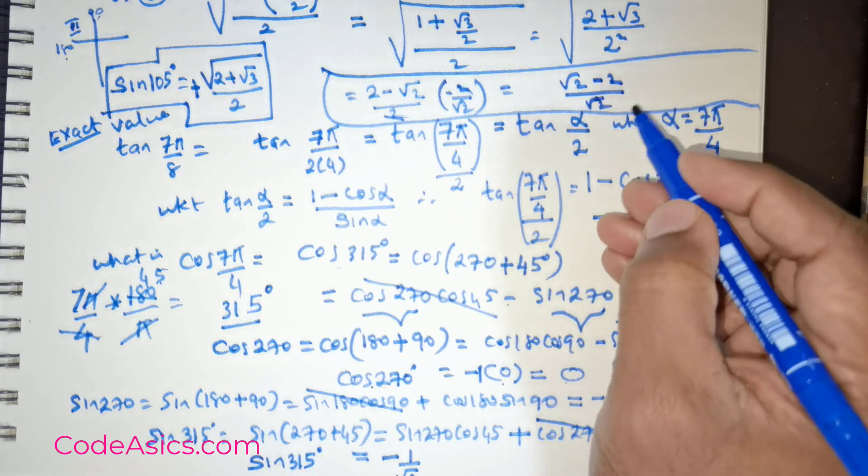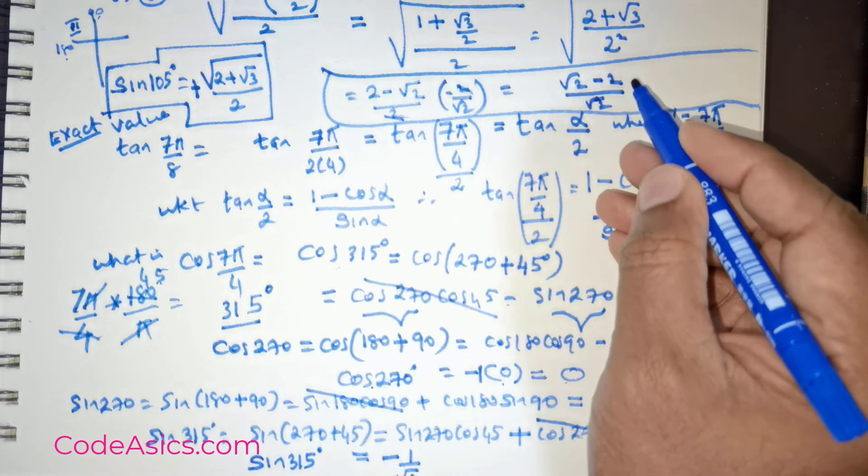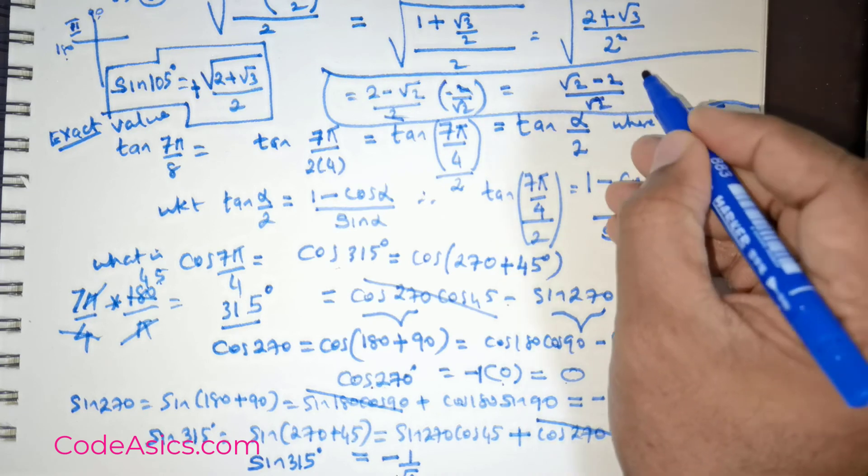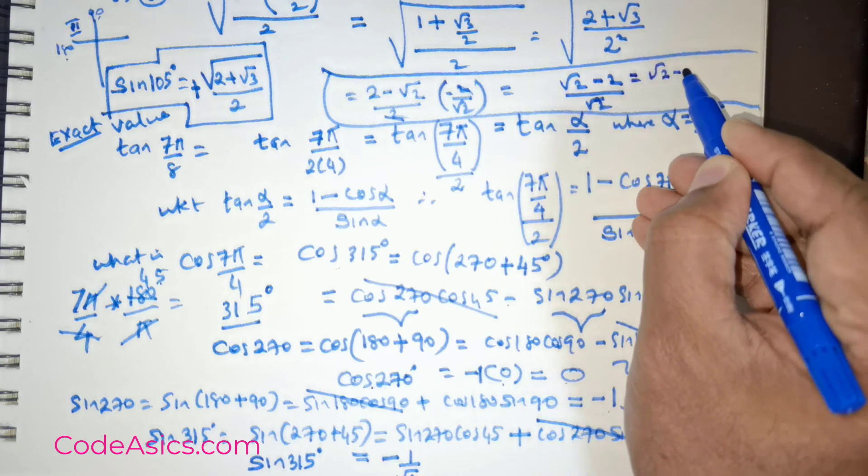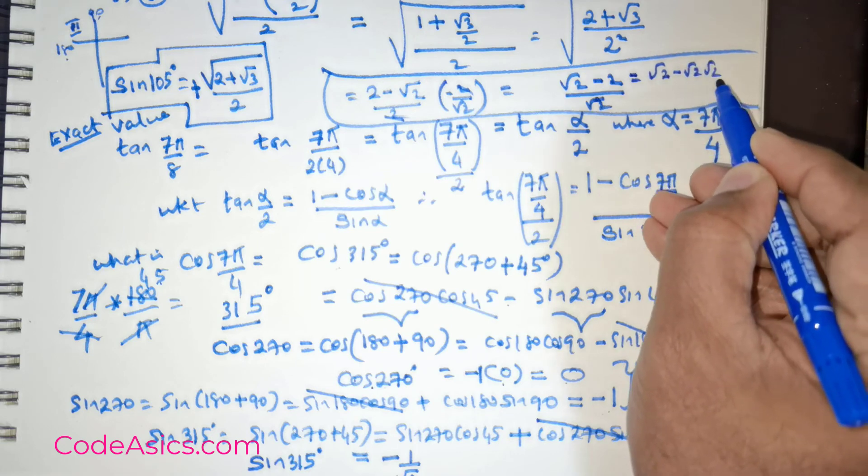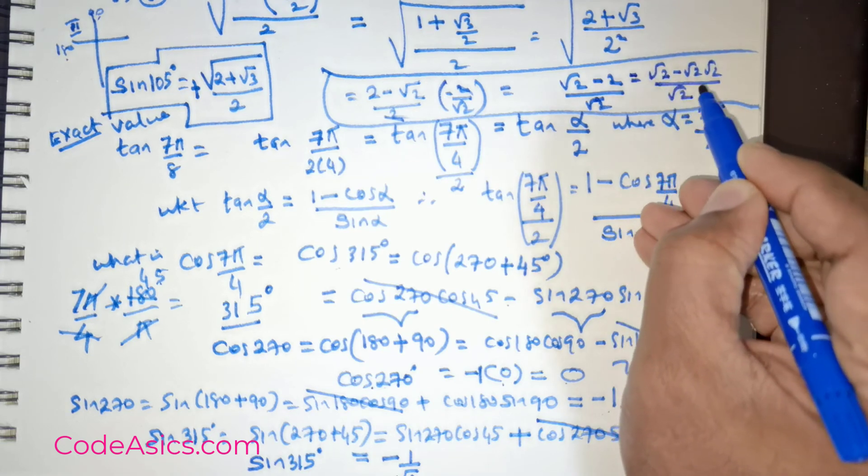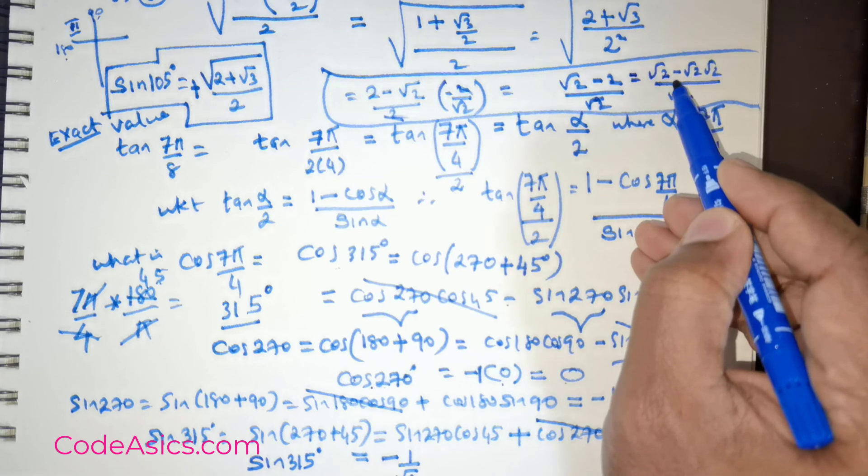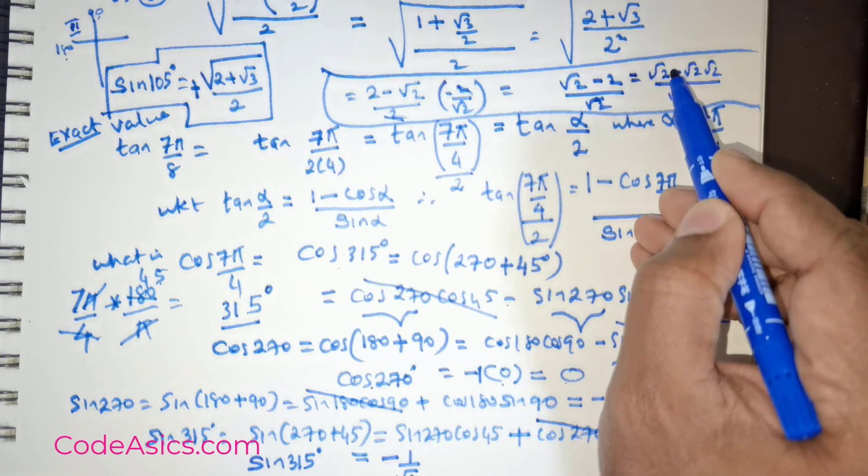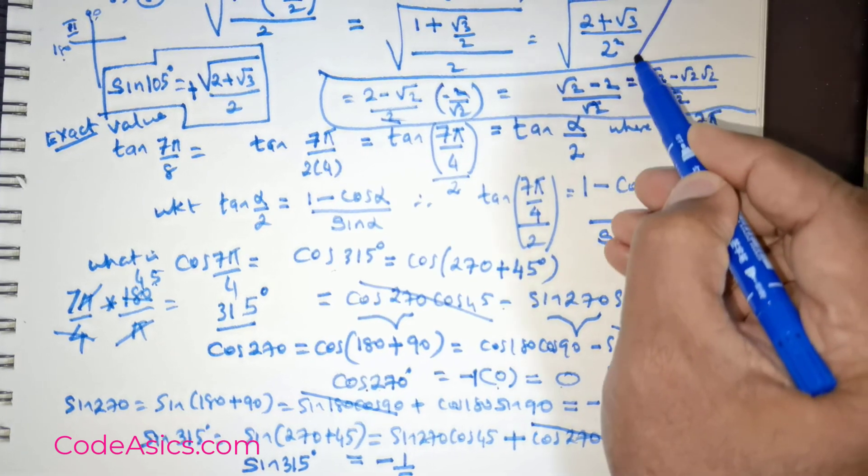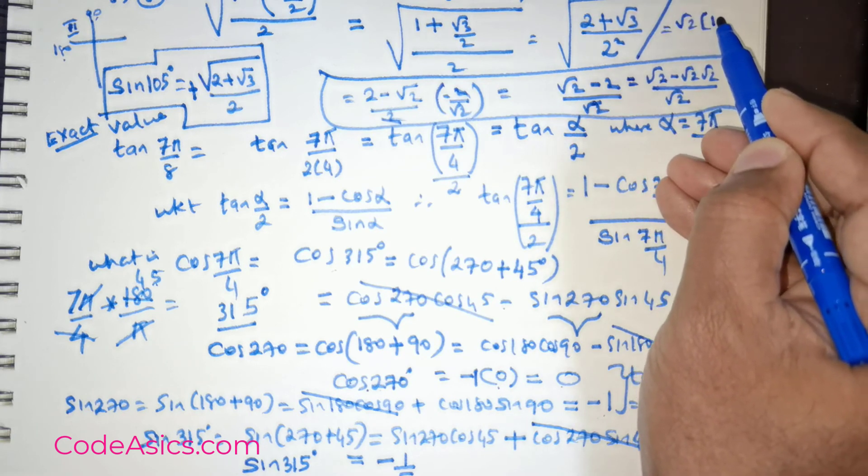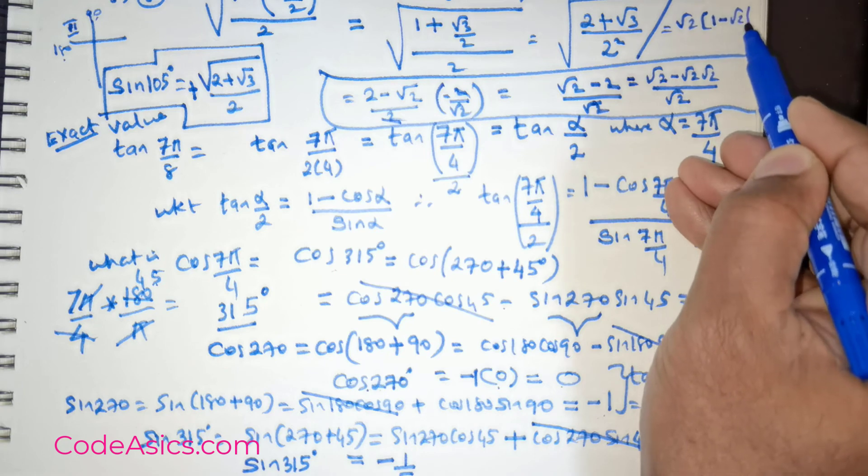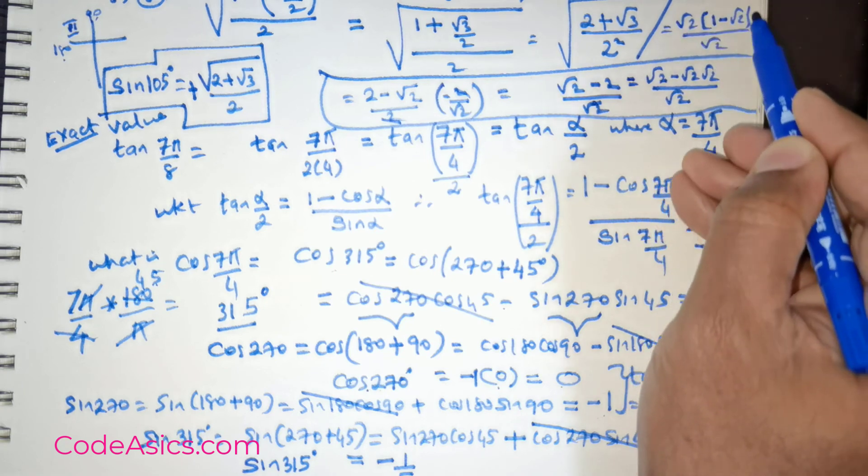Now if you want to further simplify this, you can actually write this as root of 2 minus root of 2 times root of 2 divided by root of 2. And if you were to take the root 2 out, I'm just going to place that value here. If I were to take that root 2 out, this is going to be 1 minus root 2 divided by root 2.